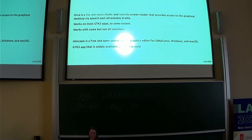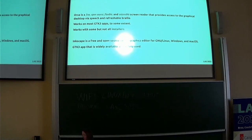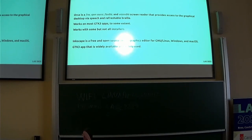So what are these things that we're talking about? Orca is a free and open source, flexible and extensible screen reader. It provides access to the graphical desktop for visually impaired users. It works on most GTK3 apps, to some extent — everything's going to have an asterisk implied here — and it works with some but not all installers. Inkscape is a free and open source vector graphics editor. It's available kind of everywhere, and it is a GTK3 app that is widely available, which is kind of why we chose it as our example.